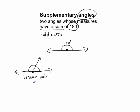A linear pair of angles — notice that in the word 'linear' we have the word 'line,' so it's a pair of angles that form a line. A linear pair is basically always going to be supplementary. So that's one case.